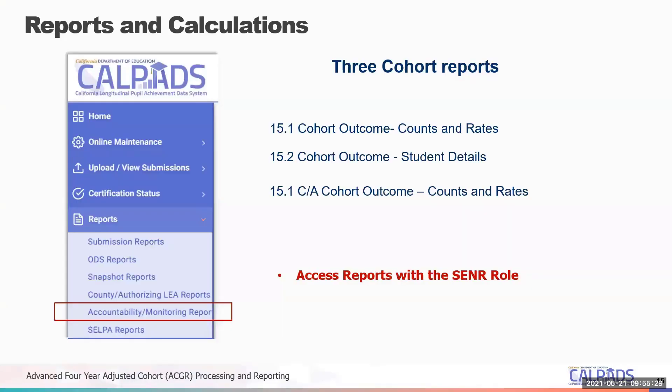This next slide shows how to get to your cohort reports. You go to the menu bar and select Accountability, Monitoring Report, and then the report you want. For most of you it will be the 15.1 outcome counts and rates, and student details on the 15.2. For counties, there's the county authorizing report, which is the 15.1 report showing each district. To access this report, you need the SNR view role.